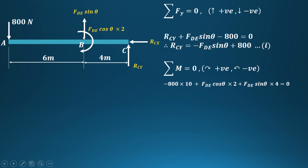Similarly, FDE·cos θ times 2 produces a clockwise moment, and FDE·sin θ also produces a clockwise moment about point C. So the 800 N load produces an anti-clockwise moment while FDE·cos θ and FDE·sin θ both produce clockwise moments.